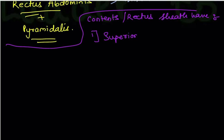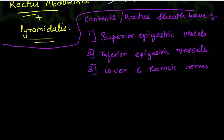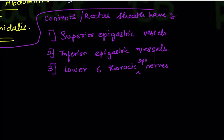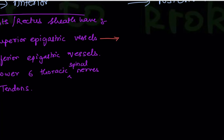The rectus sheath contains: rectus abdominis and pyramidalis muscles, superior epigastric vessels, inferior epigastric vessels, lower six thoracic spinal nerves, and the tendinous intersections.